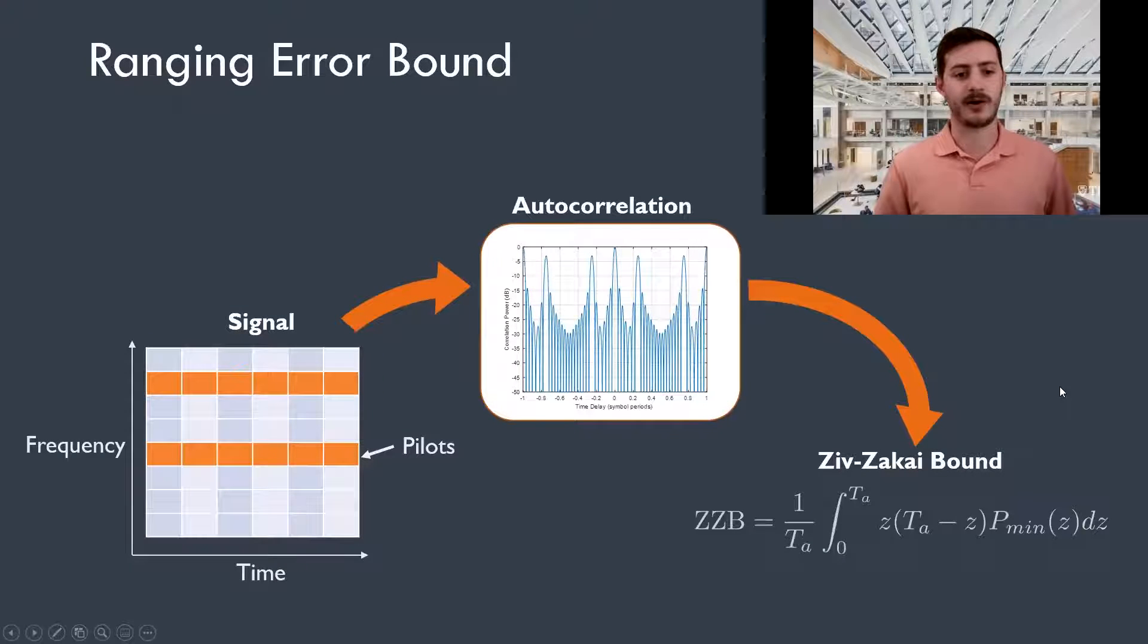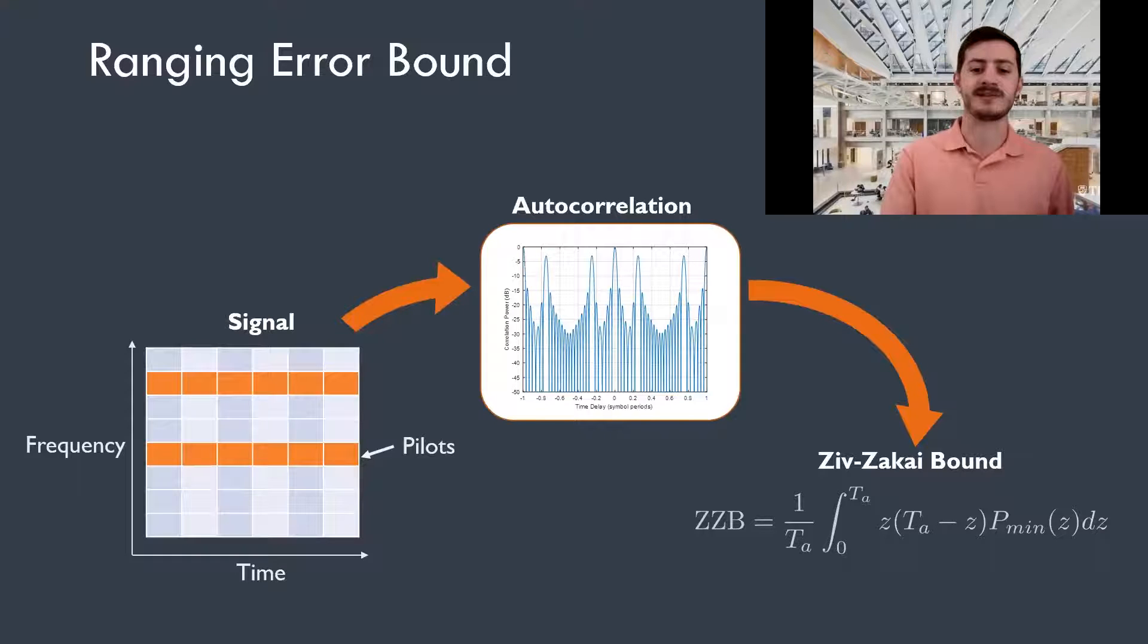Similarly for ranging, we can take our candidate signal and compute the autocorrelation function, which we plug into the Ziv-Zakai bound. And this will give us a bound on the time of arrival error, and therefore the ranging error that we can experience. Now it's important to use the Ziv-Zakai bound instead of the Cramer-Rao bound, because the Ziv-Zakai bound captures a unique thresholding effect that occurs at low SNRs.